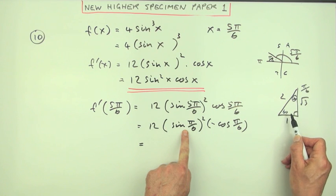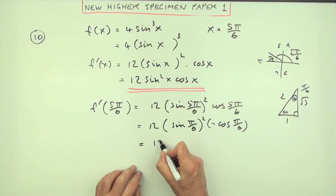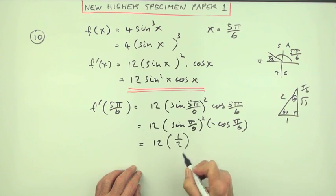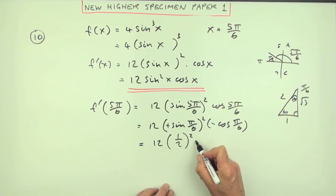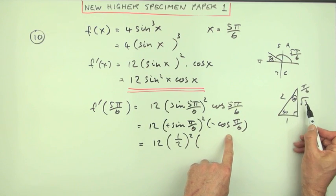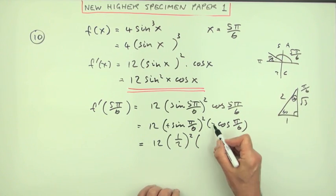So the sine of π/6 is the opposite, the side without the angle, that's a half. So I've got 12 times positive a half squared times the cosine is the adjacent side, that's √3/2 but it's negative.